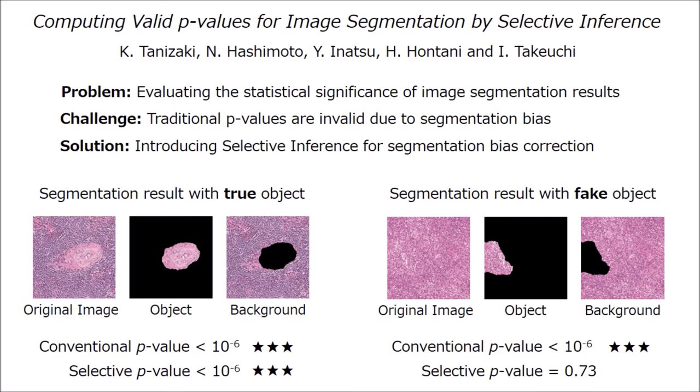Actually, traditional test is biased since the segmentation algorithm itself is designed to find an object so that it is different from the background.